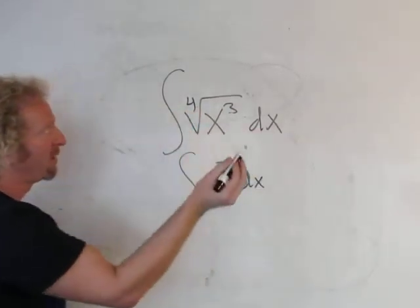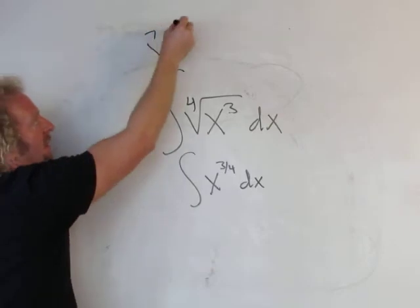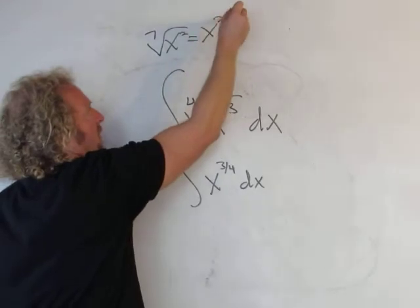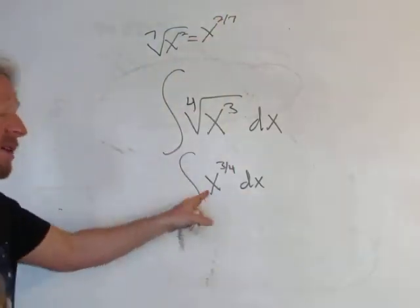Right, so if you had like seventh root of x to the two, it's a property of exponents—it's just two over seven. Boom, every time. Okay, so very useful stuff. Now we can integrate this, right?